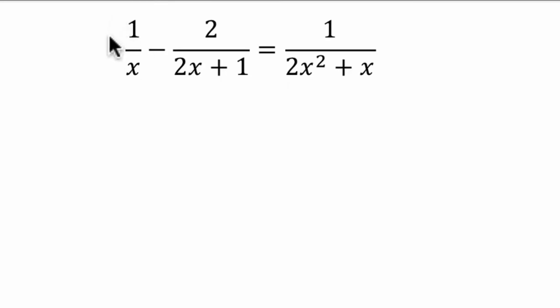My first step is to multiply by x and 2x plus 1. The reason I'm going to do that is because that's a multiple of each of our denominators. Notice we have the factor x in our first term here and we have 2x plus 1 right here.